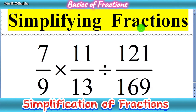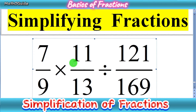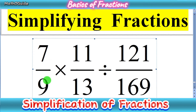We have a simple type of question. Sometimes we have multiple operations in fractions, and in this question we have three fractions — two fractions are being multiplied and two fractions are being divided. It means we have multiple operations of division and multiplication. The question is: 7 over 9 times 11 over 13, divided by 121 over 169.